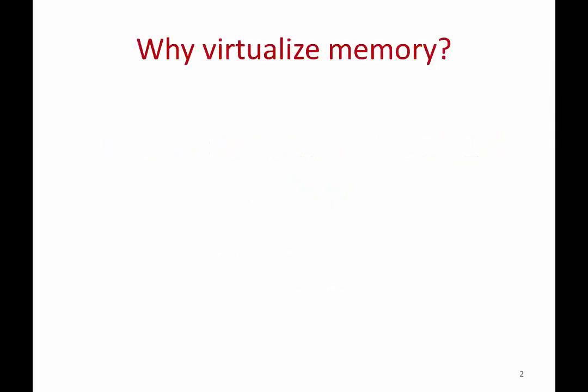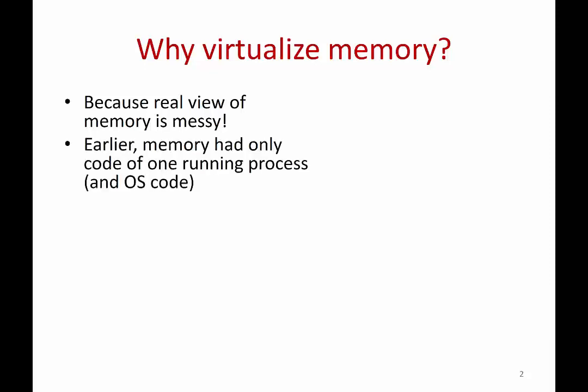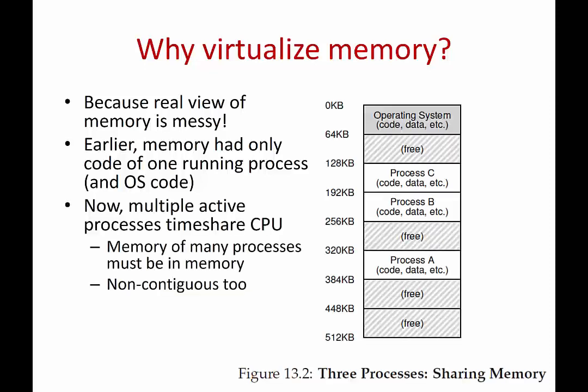Why do you need to virtualize memory? Why do you have to abstract it out? Why can't you expose the real view of the memory? Because the real view of actual physical memory is very messy. In the earlier days, the RAM of a machine would only have the code and data of one process and probably some code of the operating system. It was fairly clean and the process could know where its code was residing in actual memory.